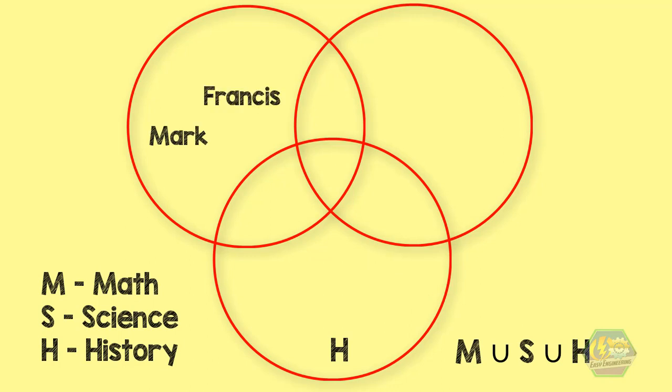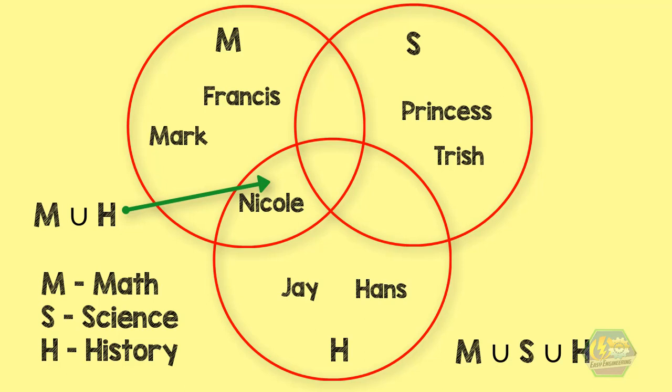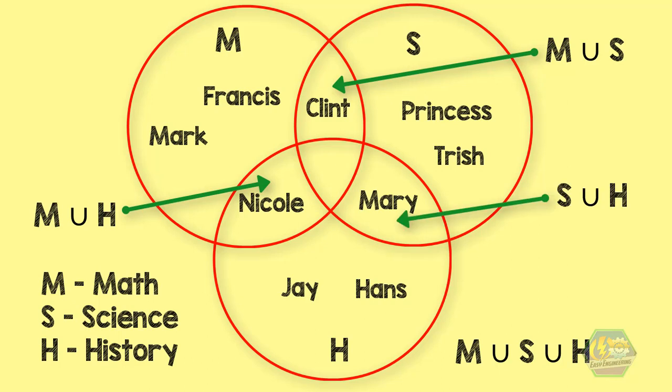This diagram shows the union of the three sets: M union S union H. You can see that Mark and Francis like math. Princess and Trish like science. Jay and Hans like history. Nicole likes both math and history. Clint likes both math and science. Mary likes both science and history. And Ray likes all three subjects. As you can see, we can now have some fun with unions and intersections. Amazing, right?